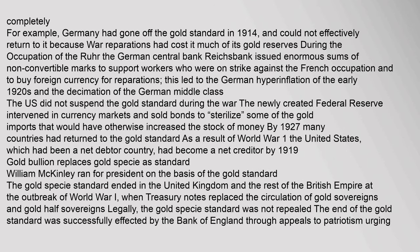Germany had gone off the gold standard in 1914 and could not effectively return because war reparations had cost it much of its gold reserves. The German central bank, the Reichsbank, issued enormous sums of non-convertible marks to support workers striking against the French occupation and to buy foreign currency for reparations, leading to the German hyperinflation of the early 1920s and the decimation of the German middle class. The US did not suspend the gold standard during the war. The newly created Federal Reserve intervened in currency markets and sold bonds. By 1927, many countries had returned to the gold standard. The United States, which had been a net debtor country, had become a net creditor by 1919.